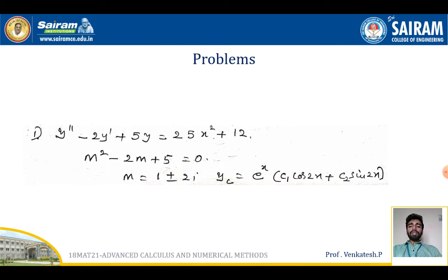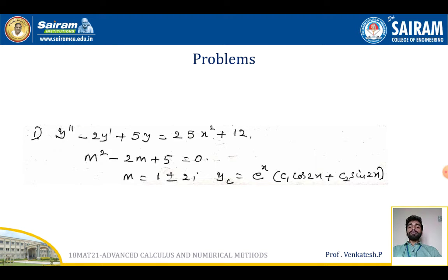For example, consider the problem: y'' - 2y' + 5y = 25x² + 12. This is a non-homogeneous differential equation where f(x) is a polynomial. Replacing y' with Dy and y'' with D²y, the equation becomes D²y - 2Dy + 5y = 25x² + 12. Taking y as a common factor, we get (D² - 2D + 5)y = 25x² + 12.